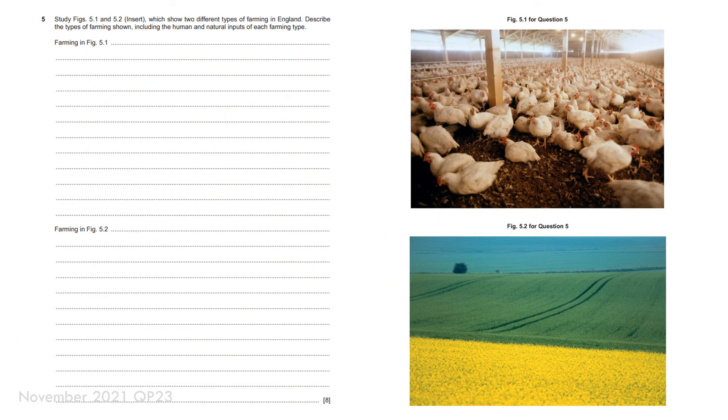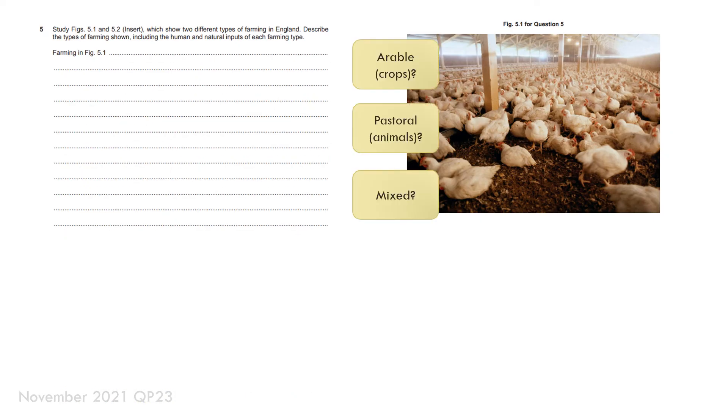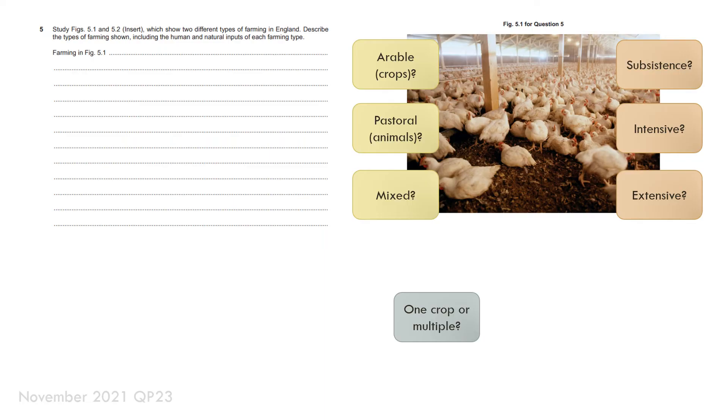Moving on to another one where we have to look at the human and natural inputs of each farming type. Again take each image identify if it's arable pastoral or mixed and then if it's subsistence intensive or extensive. And if it's one crop one animal rows or random small or large scale. And if it's manual done by machinery.